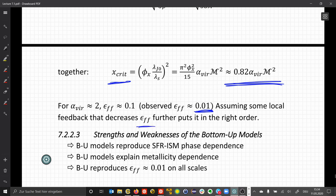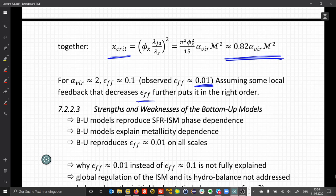The strength of the bottom-up models is that it reproduces the dependence of the star formation rate with the interstellar medium phases. It explains the metallicity dependence and it produces about the correct efficiencies for our star formation.